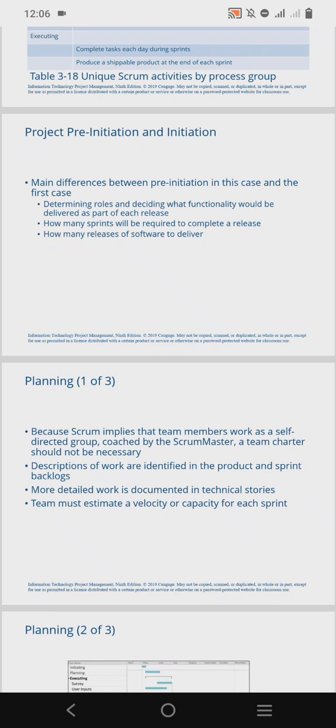Because Scrum consists of team members that work as a self-directed group under their own control, coached by the Scrum Master, a team charter is not needed. A team charter's purpose is to define and document the team's objectives, resources, and constraints — but since the team members are self-directed and coached by the Scrum Master, there is no need for it.